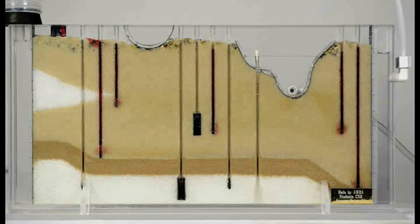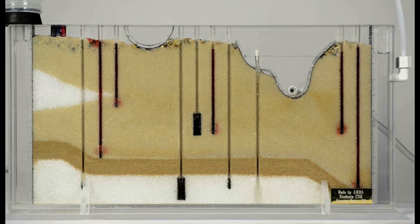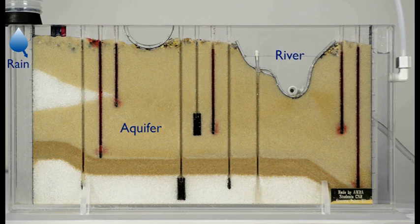Our sand tank represents a slice through the ground and is used to demonstrate how groundwater flows through rocks. Rocks that contain groundwater in fractures and in the spaces between grains are called aquifers.